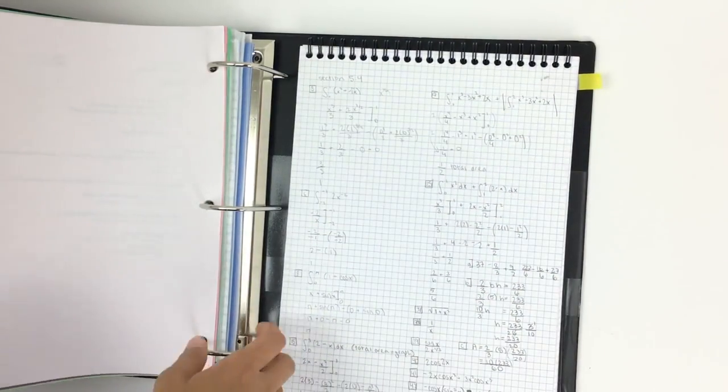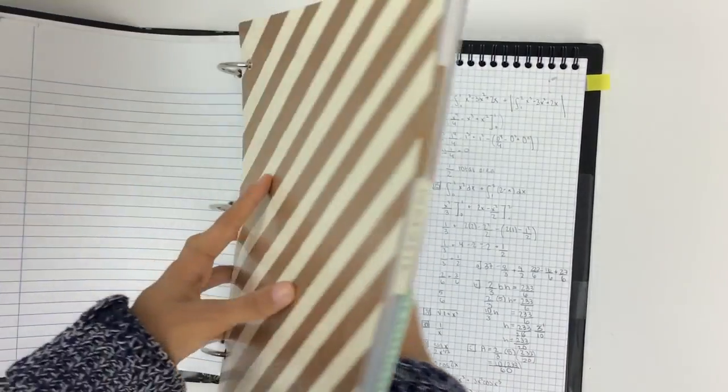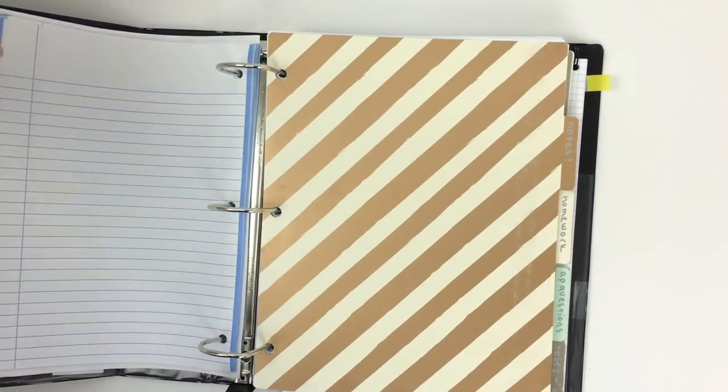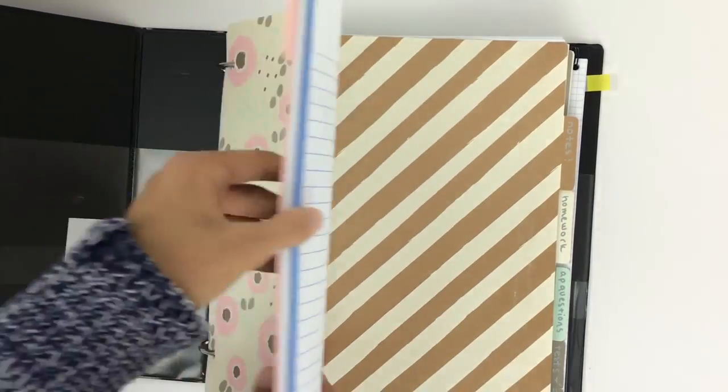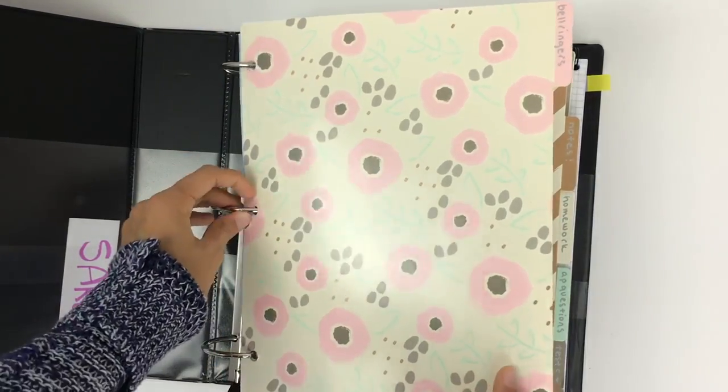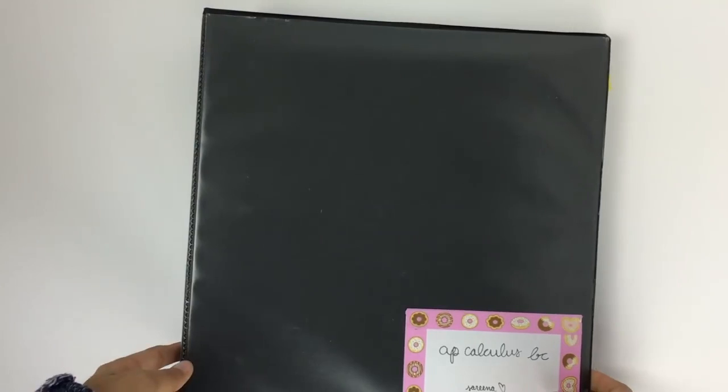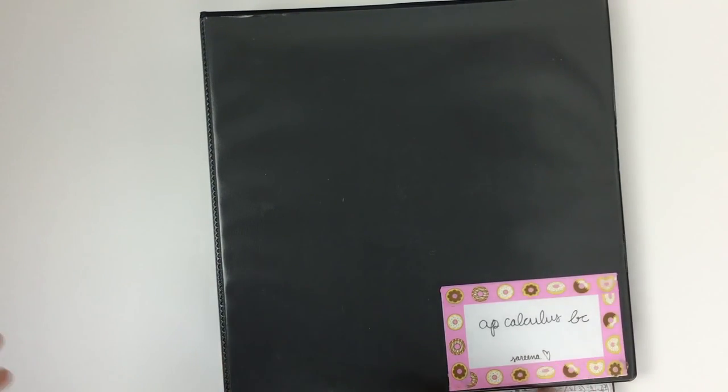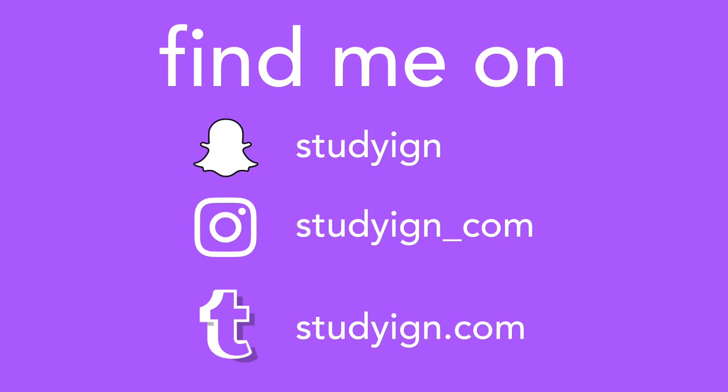This is definitely my favorite thing that I've started implementing as I organize within a binder, because although loose-leaf paper is great, I think that spiral notebook just really helps me stay organized as a whole. I'm really happy with this system, and I hope that some of you found this helpful. If you liked this video, please give it a thumbs up.